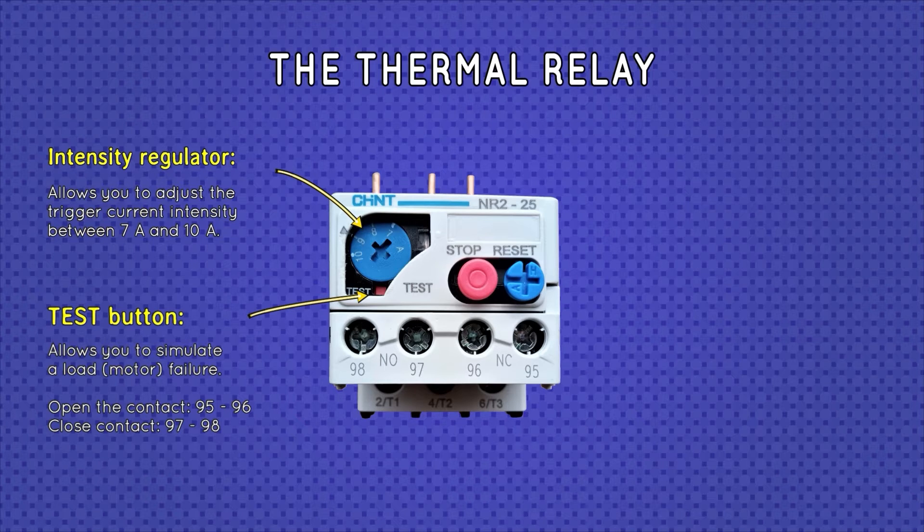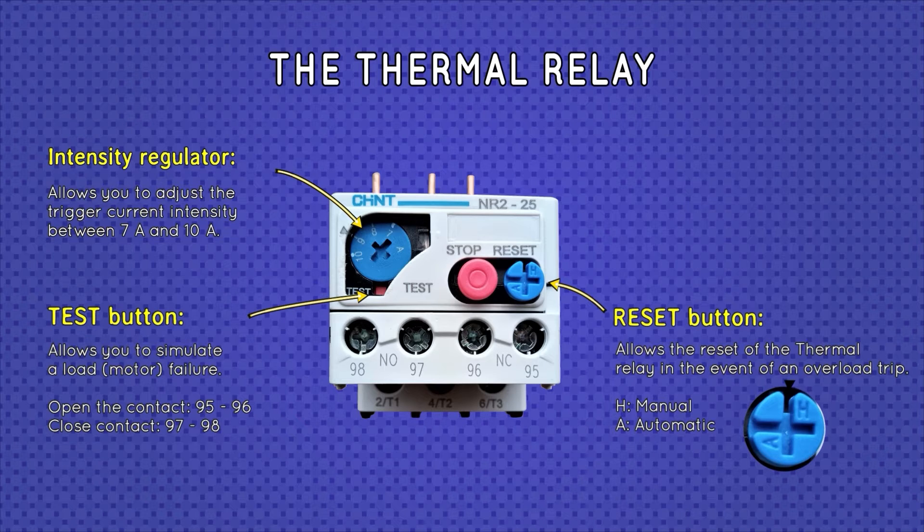The reset button allows the reset of the thermal relay in the event of a trip due to overload or having simulated a fault with the test button. The reset button can be found in manual mode, which means that we must press this button to reset its contacts, or automatic mode, which without the need to press anything after a while automatically resets its auxiliary contacts.